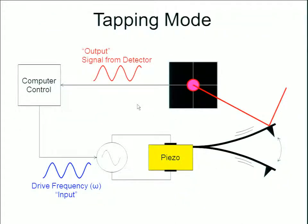A schematic shows the piezoelectric material attached to the cantilever. We've determined our resonant frequency, and that is the frequency at which we drive the piezo. The signal from the detector will be a very quick, continuous up-down oscillation.